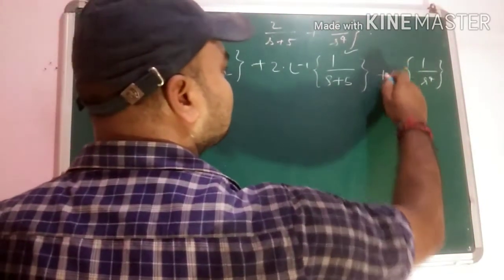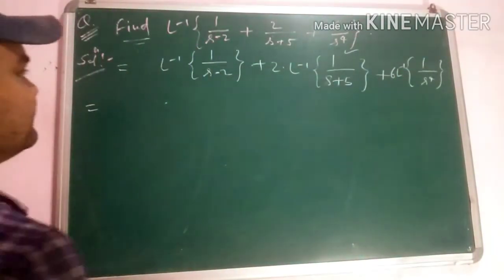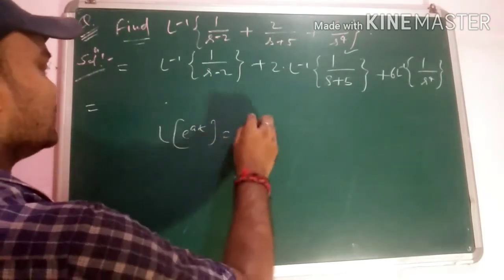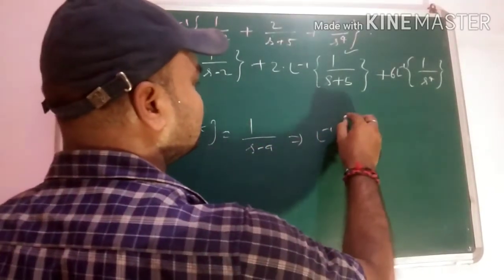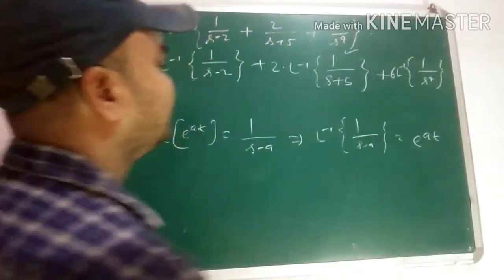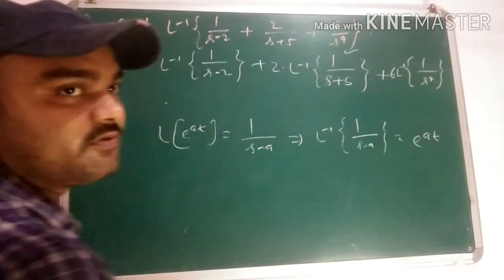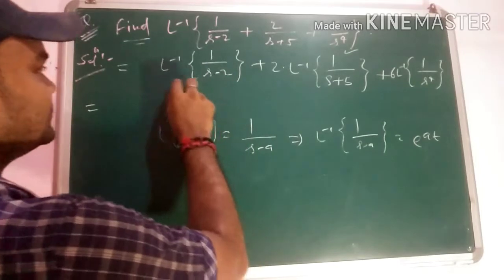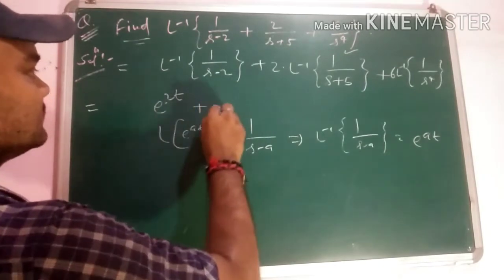Now to find L inverse [1/(s-2)]: we know that Laplace of e^(at) is 1/(s-a). So L inverse [1/(s-a)] = e^(at). Putting s-2 here, where a=2, we get e^(2t). So the first term gives e^(2t).